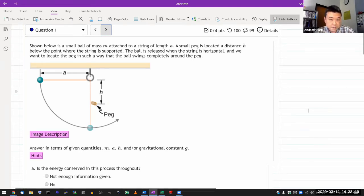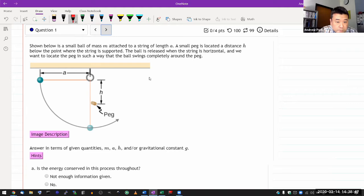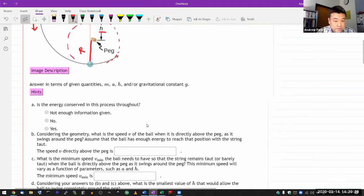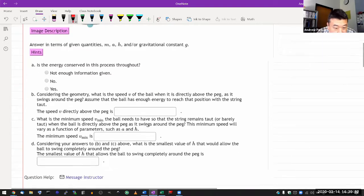Let me get started right away. It says a small ball of mass M is attached to a string of length A, and a small peg is located distance H below. I have diagrams here, and the ball is released from here. Answer in terms of given quantities, so I don't need to plug in any numbers. Good.